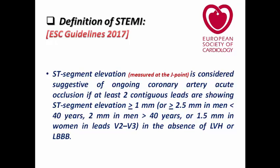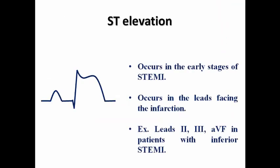The ECG guidelines define STEMI as: ST elevation measured at the J-point is considered suggestive of ongoing coronary artery occlusion if at least two contiguous leads show ST elevation ≥1 mm, or more than the cutpoint in leads V2 and V3, in the absence of LBBB. ST elevation occurs in the early stages of STEMI in the leads facing the infarction. For example, inferior STEMI shows ST elevation in leads II, III, and aVF because they face the inferior wall.